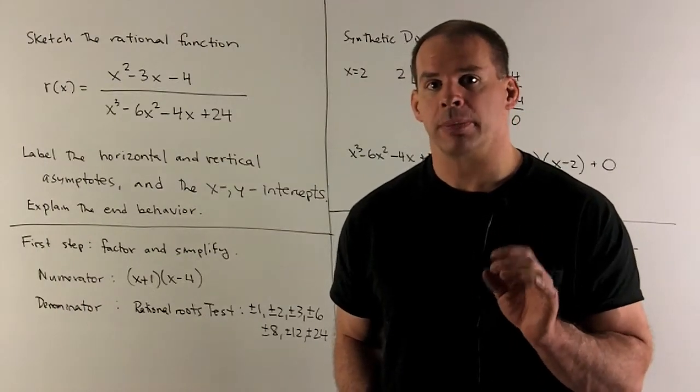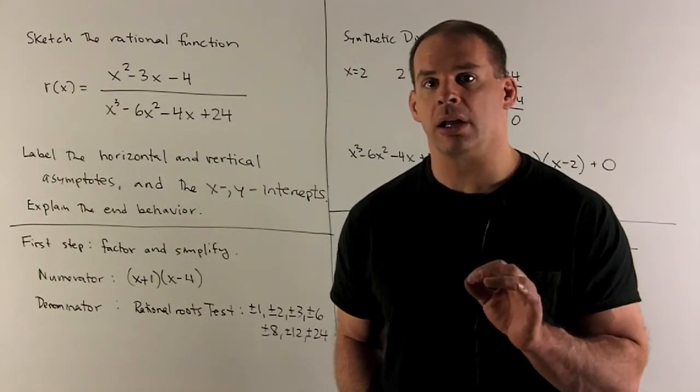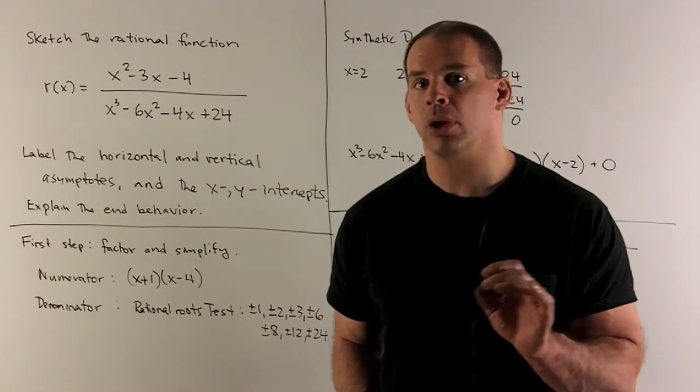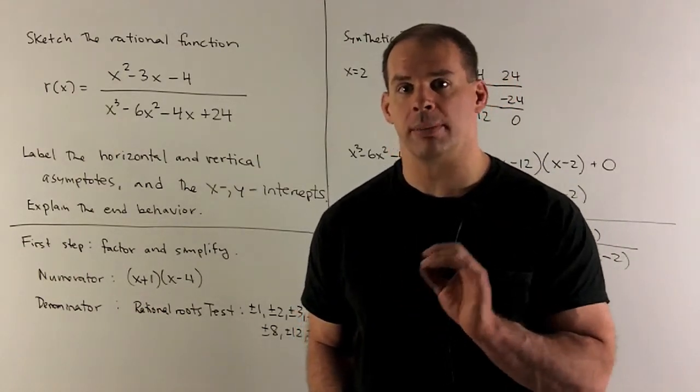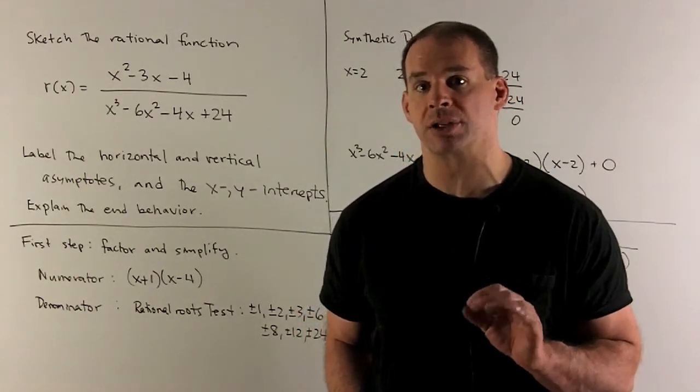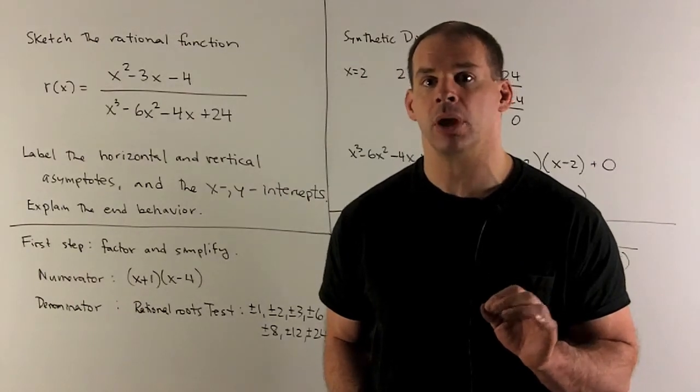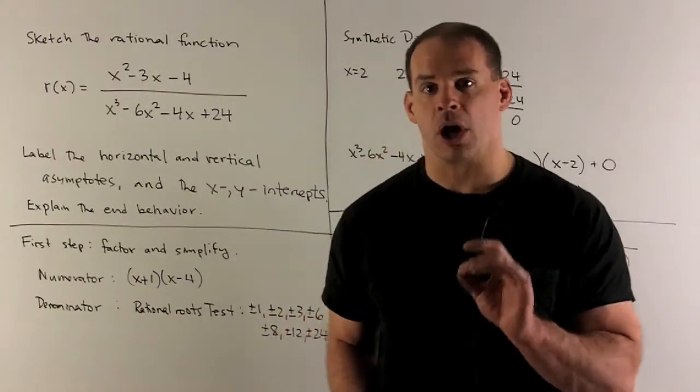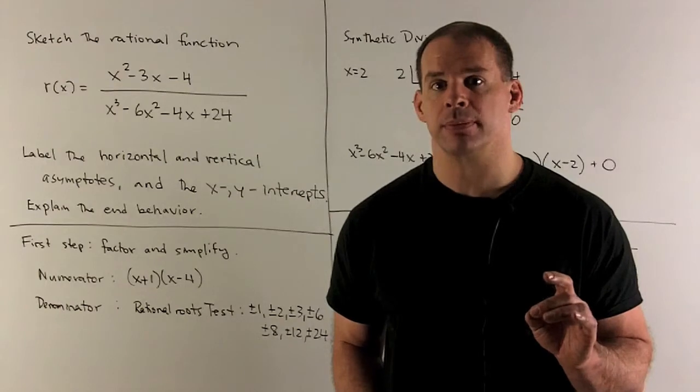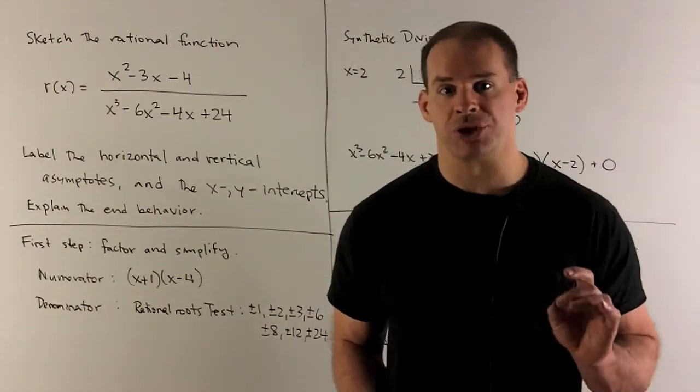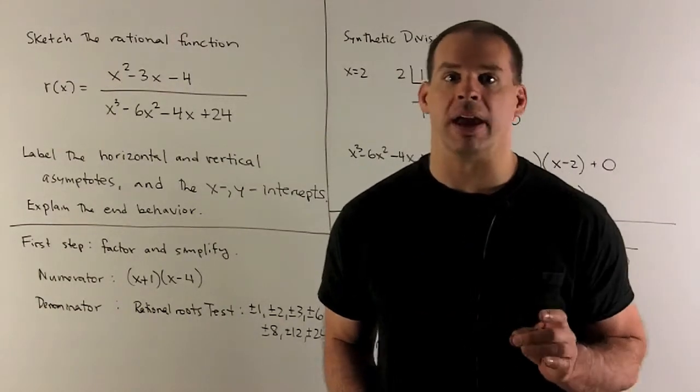Sketch the rational function r(x) equals x squared minus 3x minus 4 over x cubed minus 6x squared minus 4x plus 24. On your graph, label the horizontal and vertical asymptotes, label the x and y intercepts, and explain the end behavior of your function.